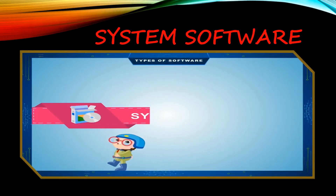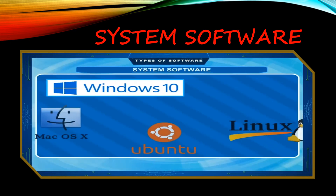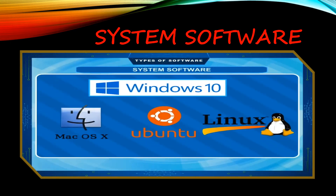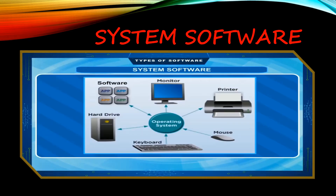First, we will discuss about system software. It is a set of programs specially designed to control various activities of a computer system. Operating system is a part of system software which controls and manages the working of all the hardware and software components of the computer system.